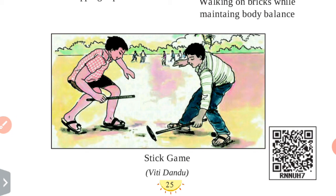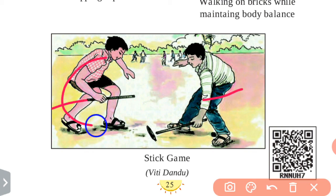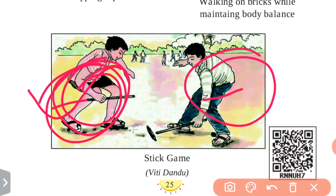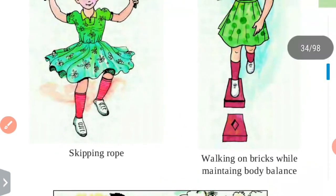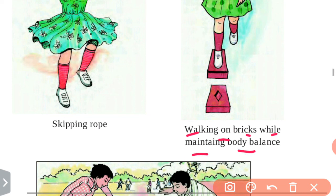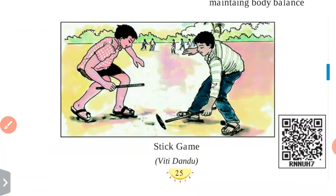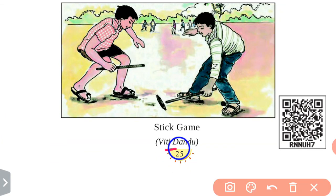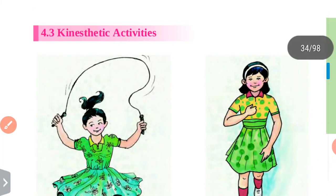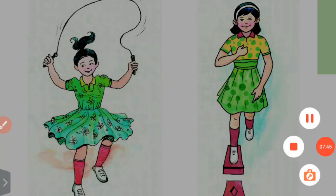This game can be played individually or between two teams — for example, three persons on one team and three on another, or five persons per team. So to summarize: the first game is skipping rope, the second is walking on bricks while maintaining body balance, and the third is the stick game, also called Vitti Dandu or Gilli Danda. I hope you understood these games. For any doubts, please write in the comment section.